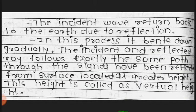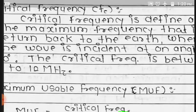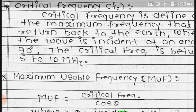The incident wave returns back to the earth due to reflection. In this process it bends down gradually. The incident and reflected ray follow exactly the same path, as though the signal had been reflected from a surface located at a greater height. This height is called the virtual height.